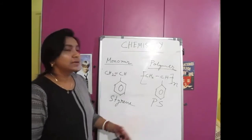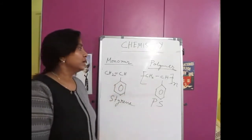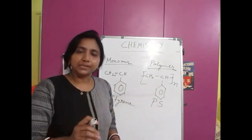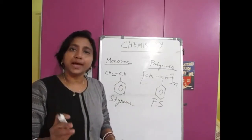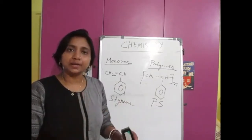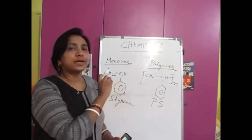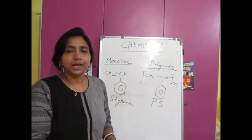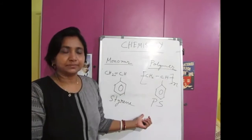So you have learned the different structures of polymers — like polyethylene, polypropylene, polyvinyl chloride, polystyrene. These are very commonly used polymers and the easiest structures, I can say.